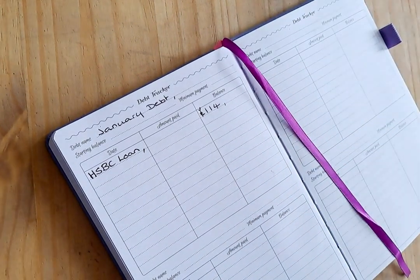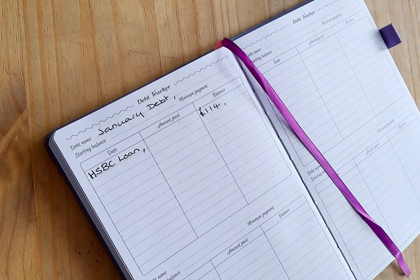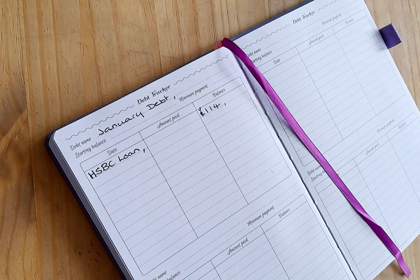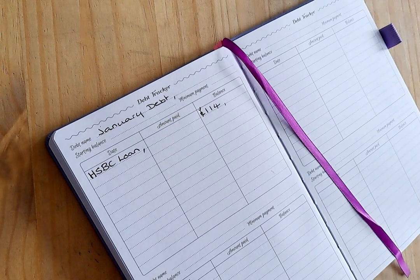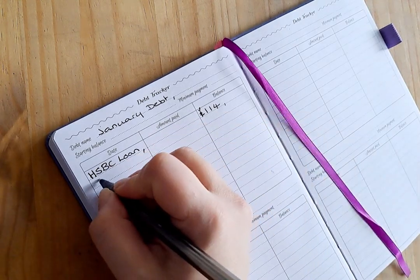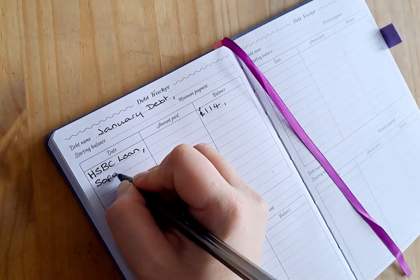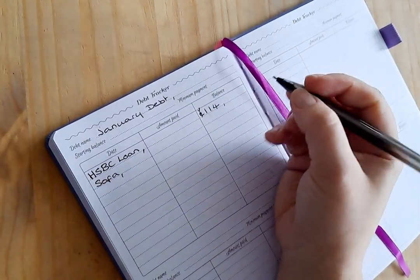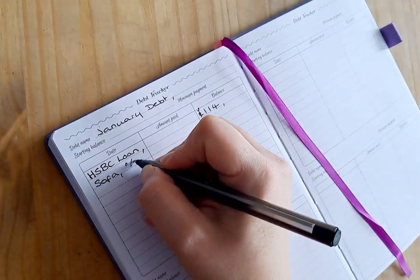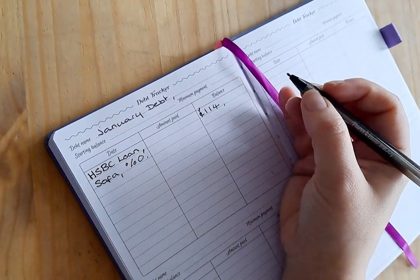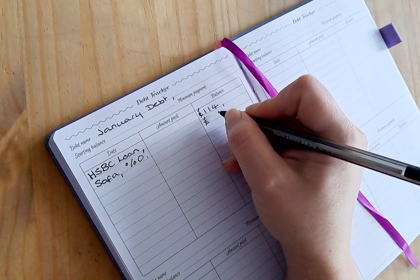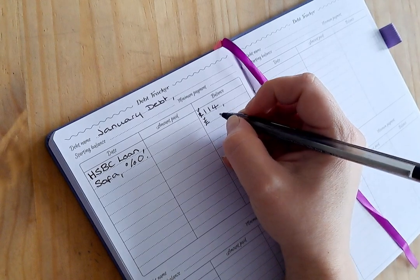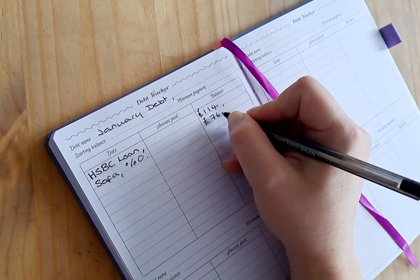The next would be my sofa payments. Sofa payments is 0% interest so I'm not too worried about this. At the end of January was £769.